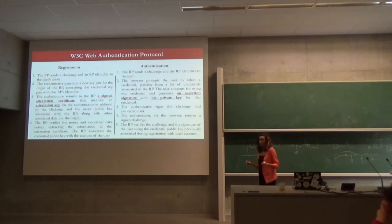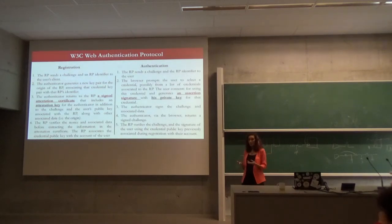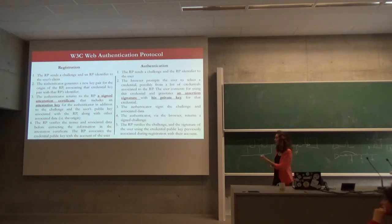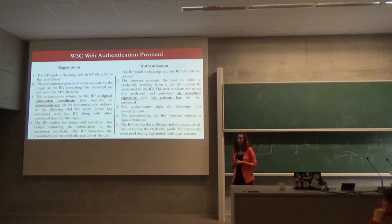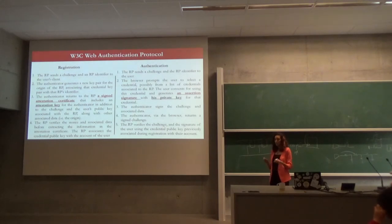We have two cases. The first one is registration and the second is authentication. Registration is when the user is trying to connect for the first time to register his device. The relying party, which is the server, will send a challenge with its ID to the user. The authenticator will generate a new pair of keys and associate them with the relying party — it will only use them with this relying party. Then it sends the attestation certificate, which contains the attestation public key and the public key to be used with the relying party. The server verifies the signature, and if it's fine, the relying party associates this public key with the user account.